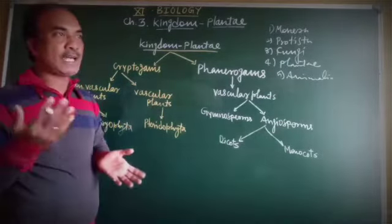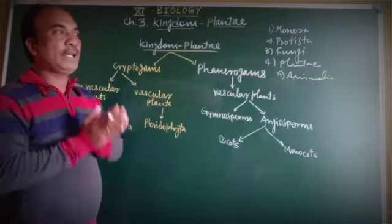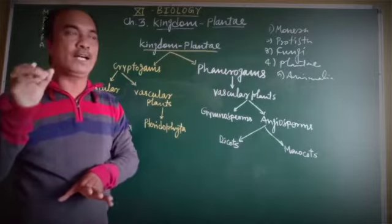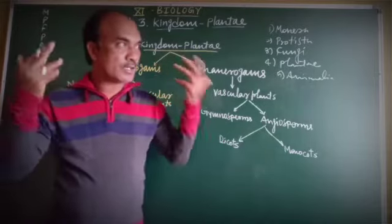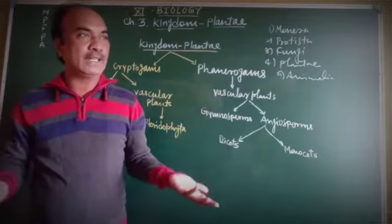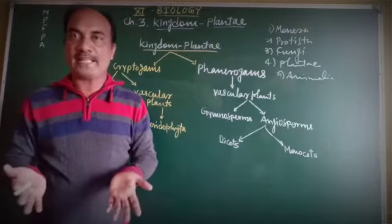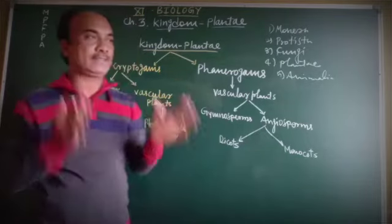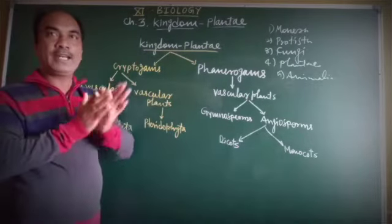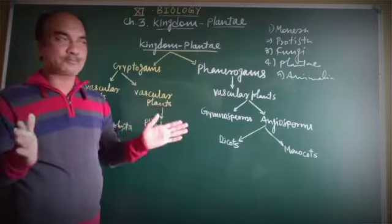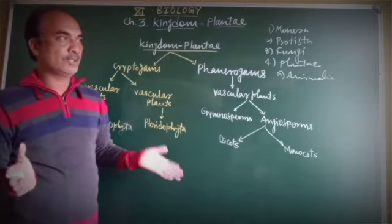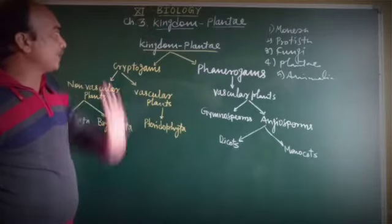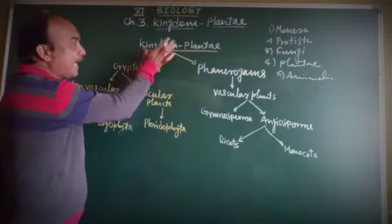Plants are found in aquatic habitats as well as on land — on trees or in various areas. Some are parasitic, some are symbiotic, some are aquatic, and some are terrestrial. These represent the variety of habitats in Kingdom Plantae.